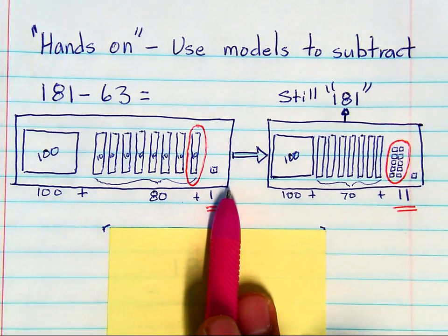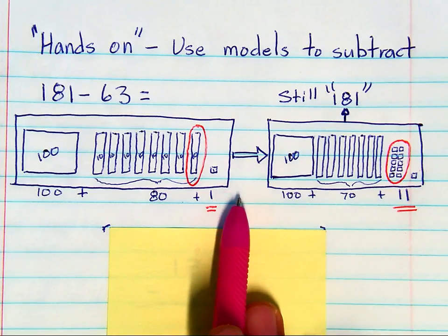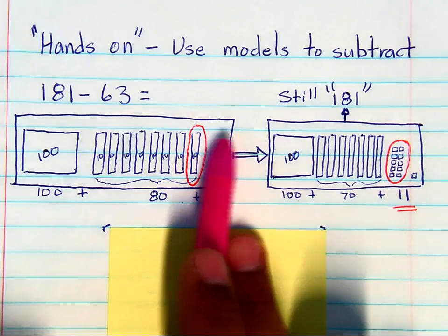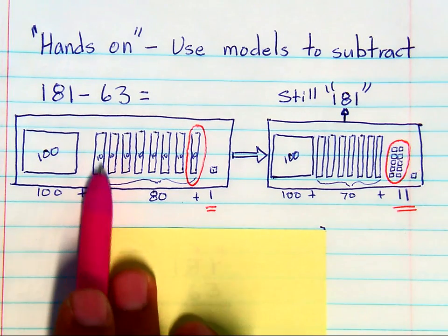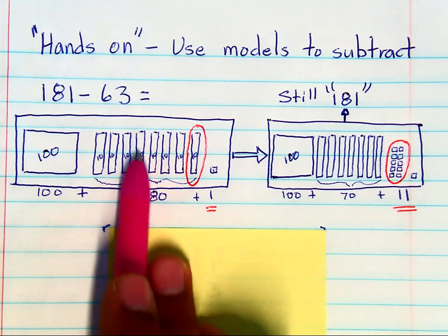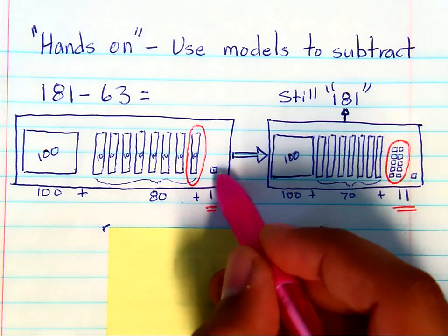So when you see it on a test or in a textbook, it's not quite the same, but this is what they look like generally. This big square is 100, each rod is 10, and each little cube is 1.